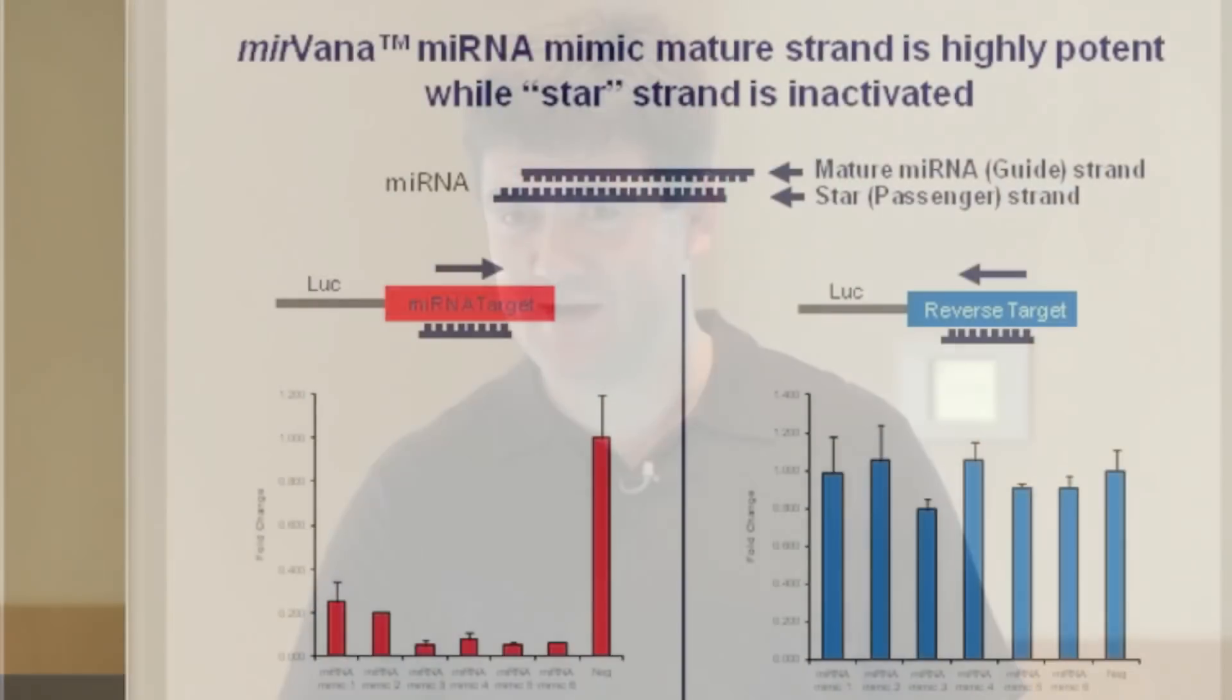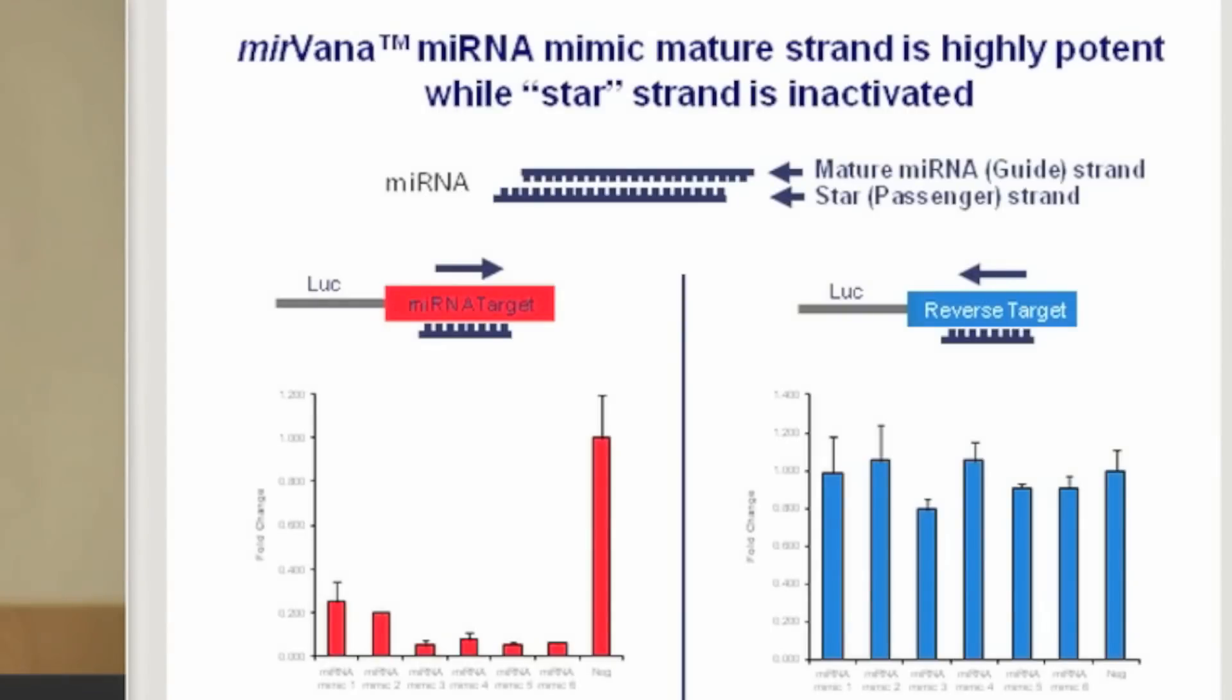Each microRNA mimic has two strands, as naturally produced microRNAs, including the mature guide strand and the star or passenger strand.